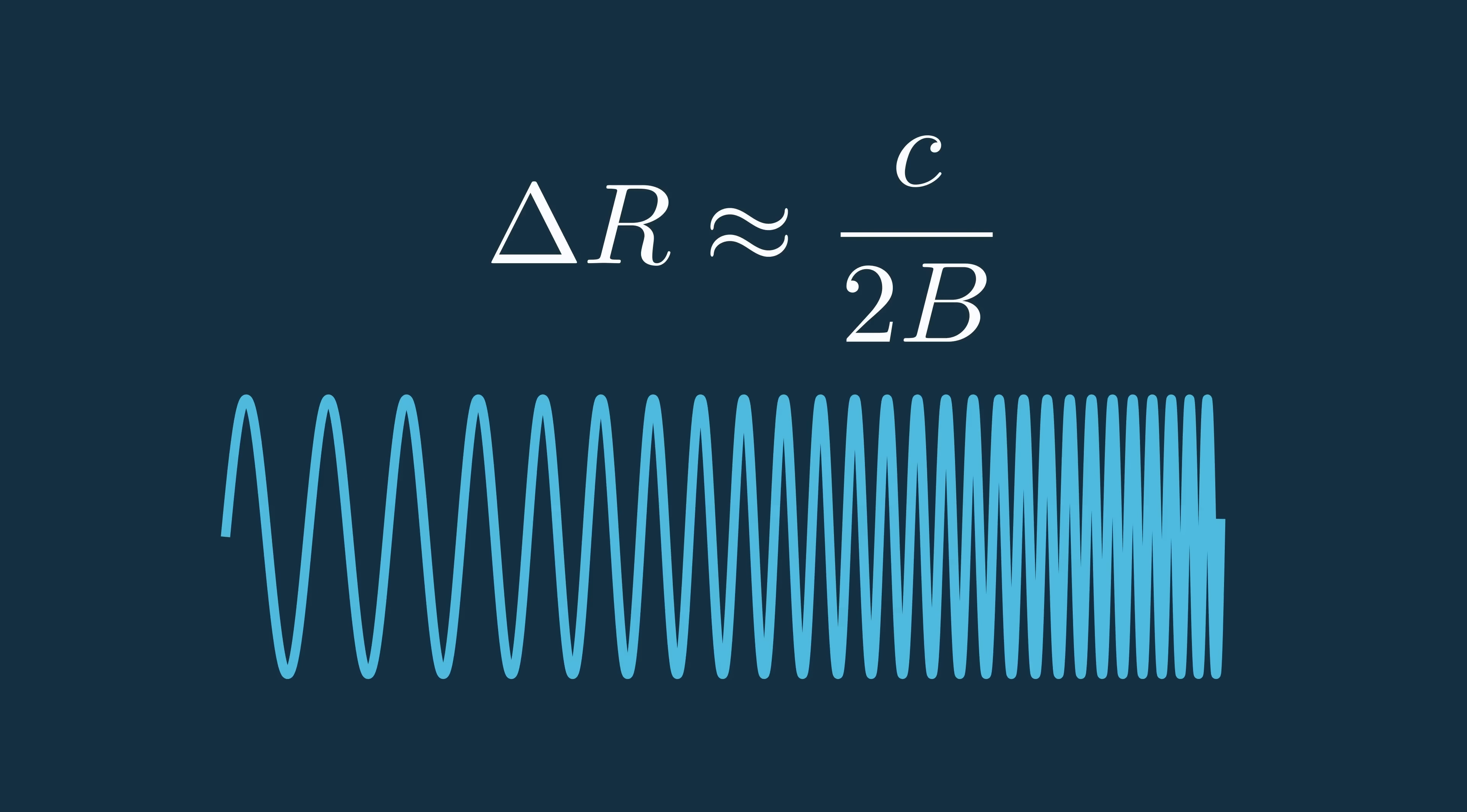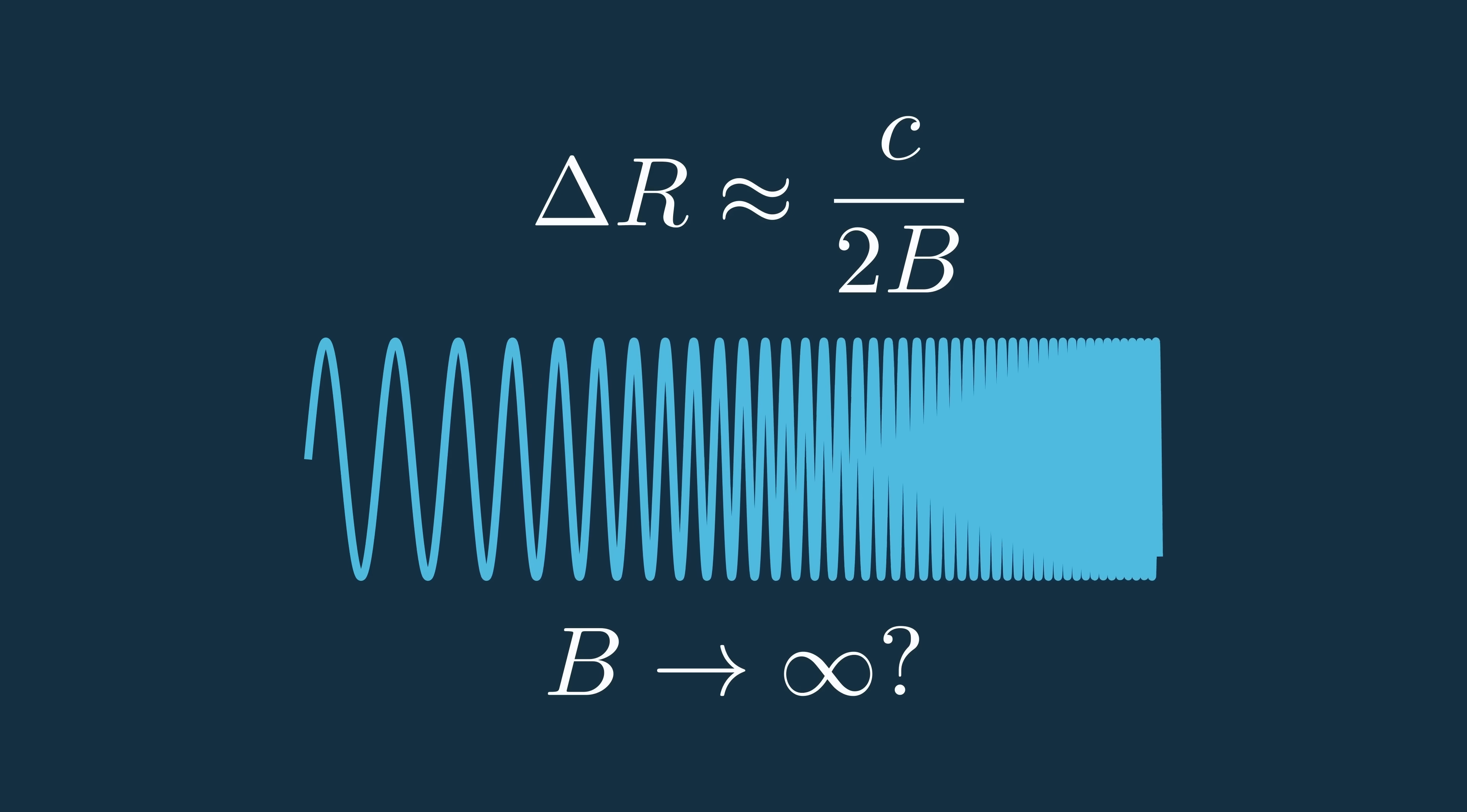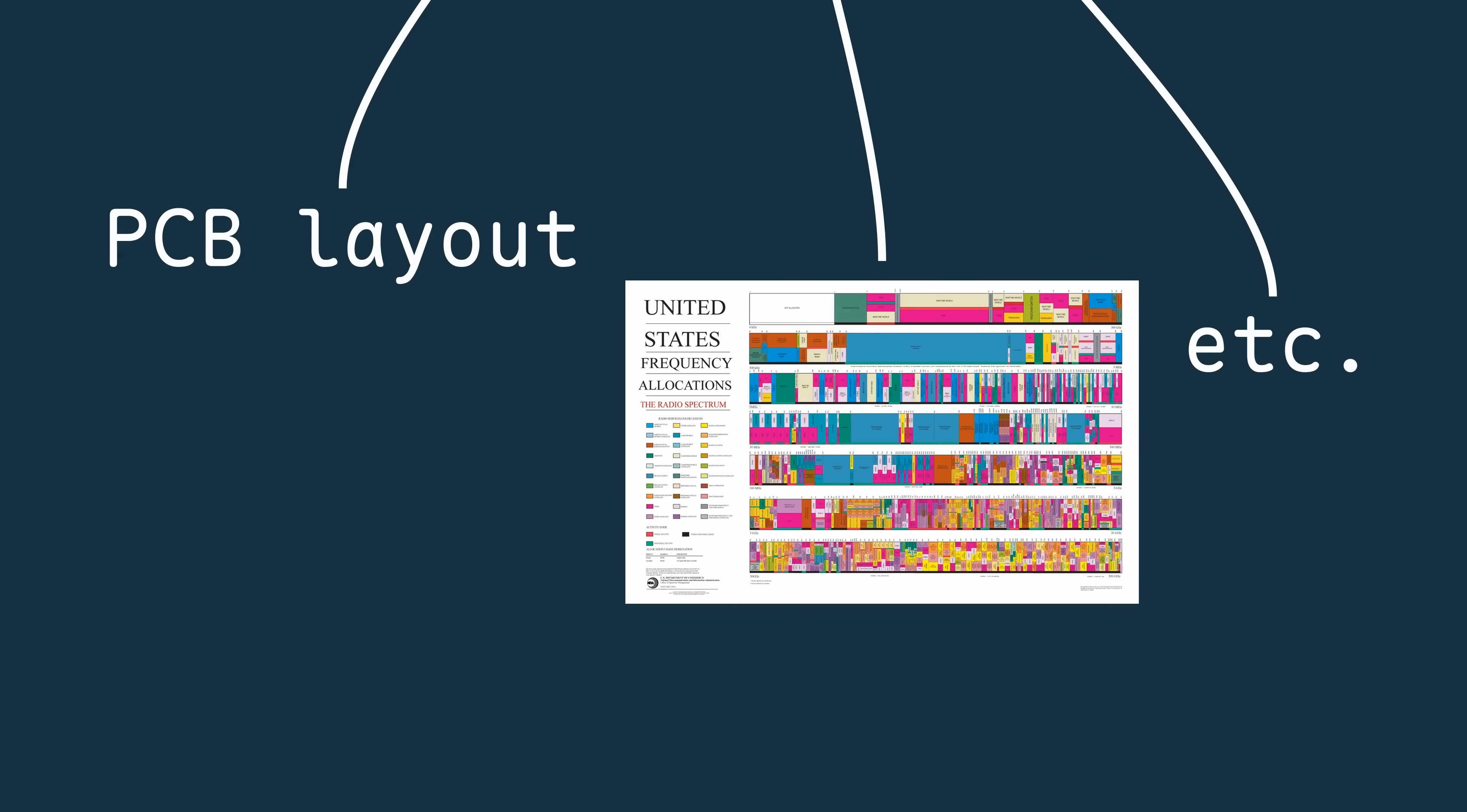So why would you not just increase your bandwidth you're transmitting indefinitely and get an infinitesimally small range resolution? Answering that would open this video up to a whole slew of other topics, but some big ones are that large bandwidths make RF boards more difficult to design, regulatory agencies limit the amount of bandwidth you can cover, and there's many many more.